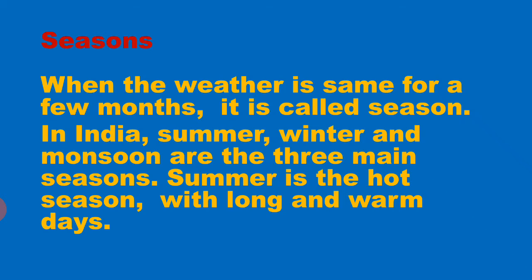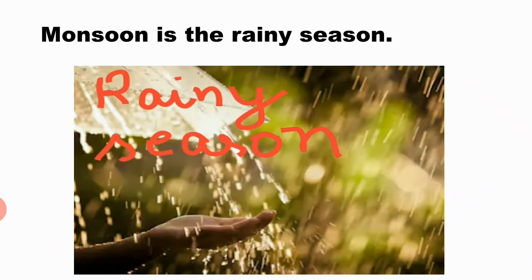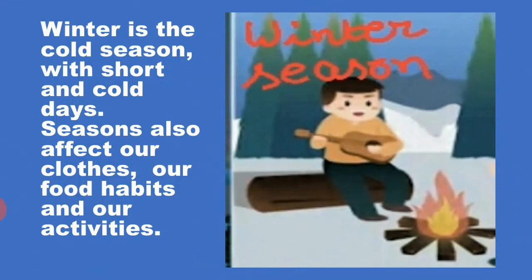Summer is the hot season with long and warm days. Monsoon is the rainy season — we use umbrellas and gum boots. Winter is the cold season with short and cold days. Seasons also affect our clothes, our food habits and our activities.